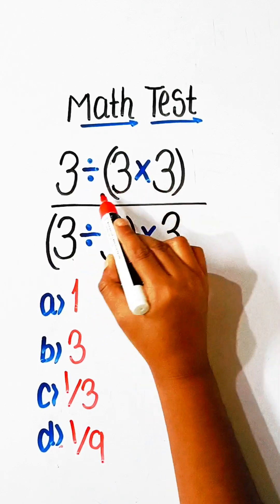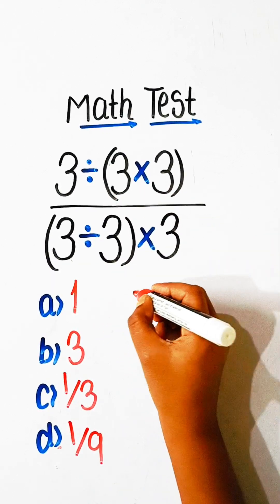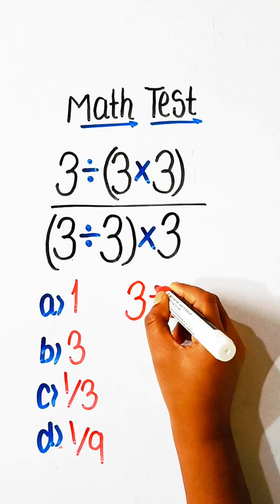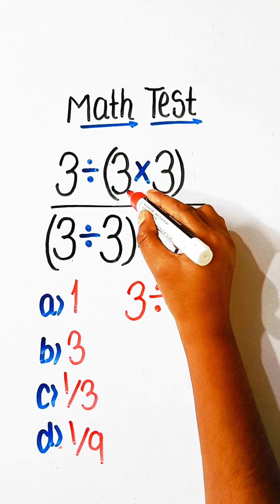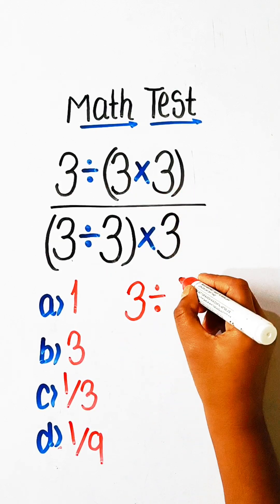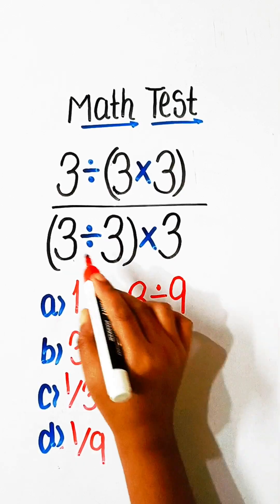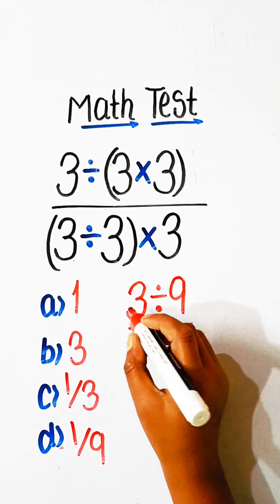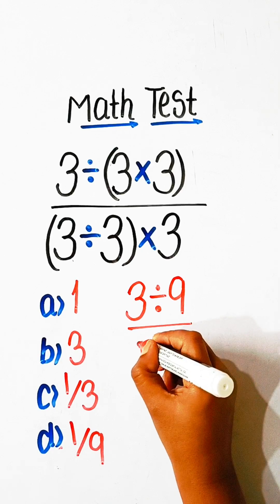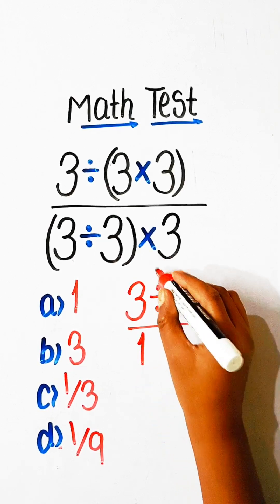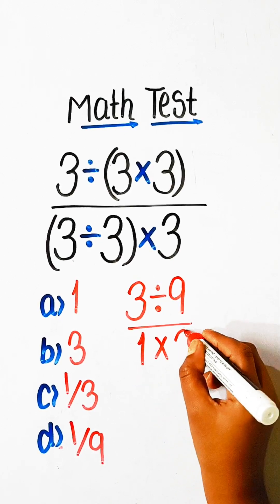We will solve the upper part of this expression. We can write here 3 divided by 3, 3 times 3 is 9, upon 3 divided by 3 is 1 multiplied by 3.